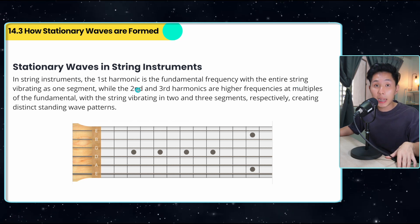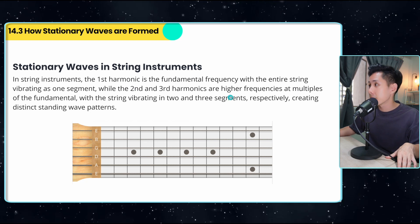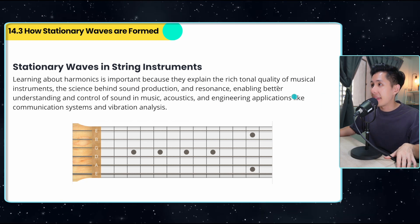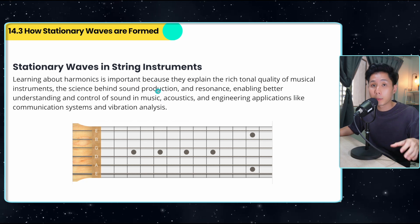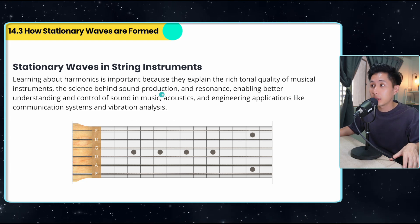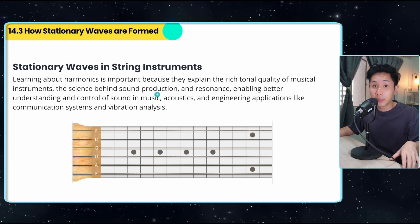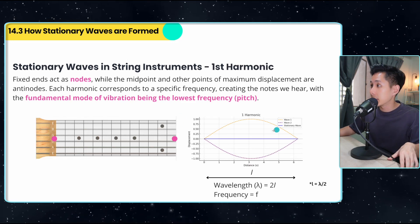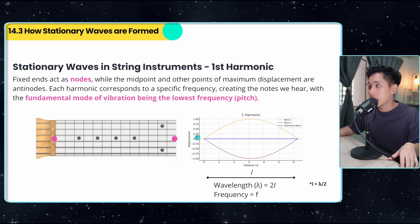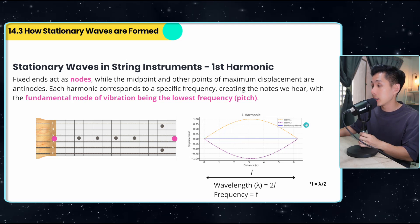And learning this harmonic is important because it helps us to know how a specific instrument produces sound. And it also helps in terms of sound production. Now I'm just going to go into how first, second, and third harmonic look like in terms of their wave. As for first harmonic, this is how the string will vibrate.